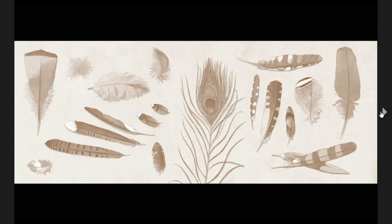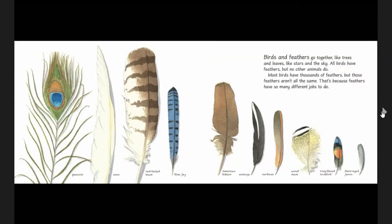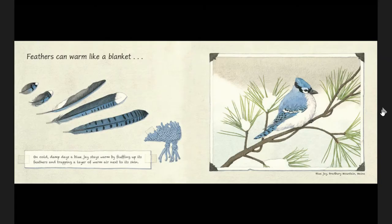So we're just going to look at about two pages here. Let's go to the information about the blue jay. It says, feathers can warm like a blanket. On cold damp days, a blue jay stays warm by fluffing up its feathers and trapping a layer of warm air next to its skin.